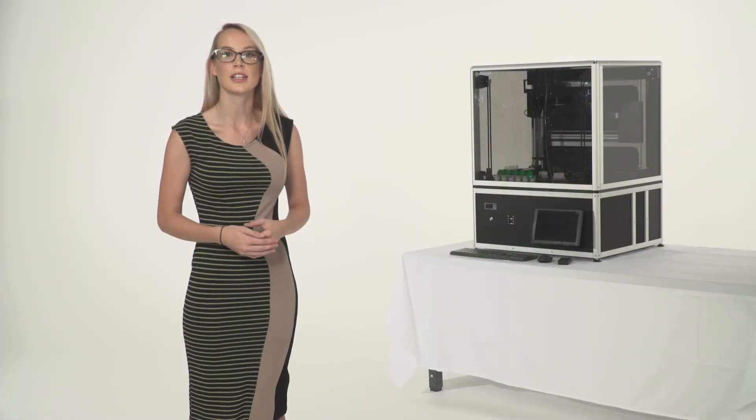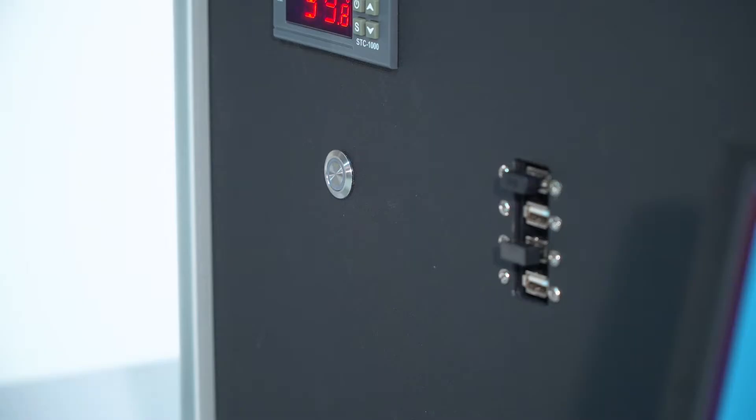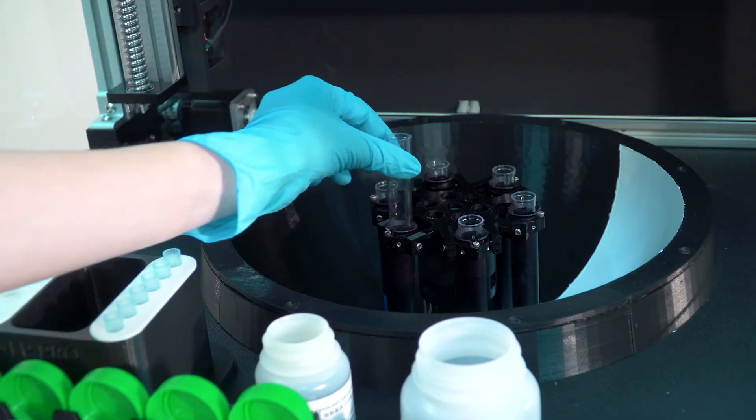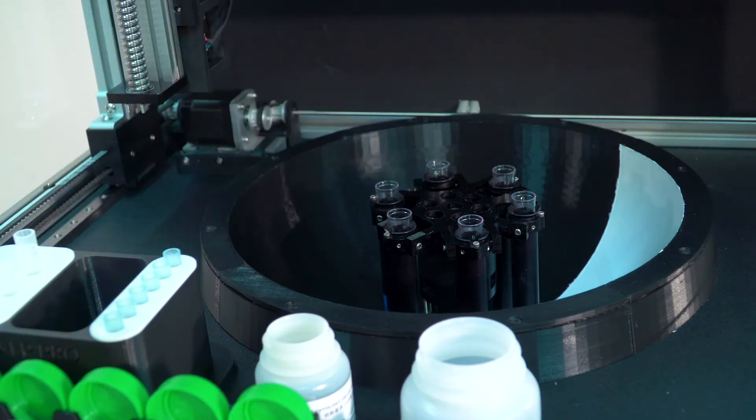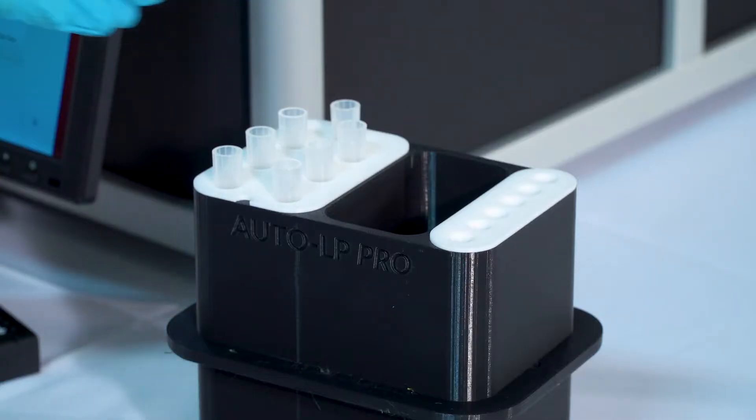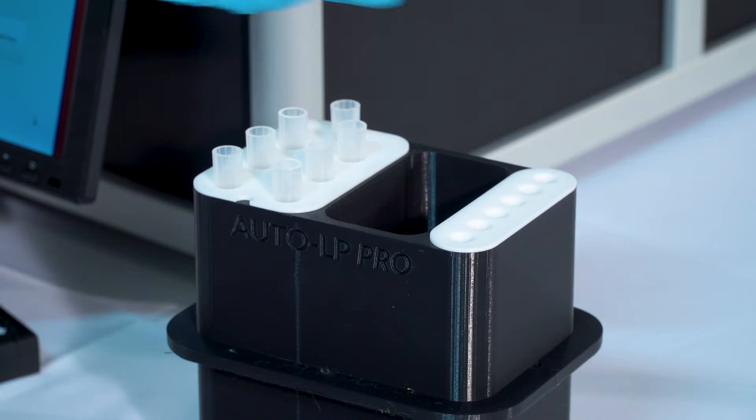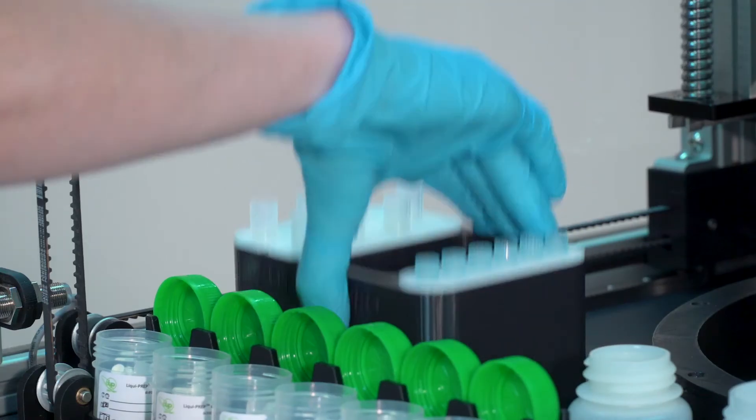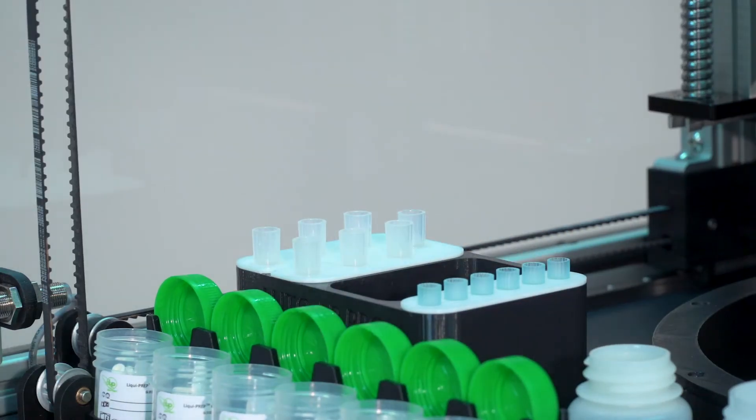Full cytology processing is simple and fast. Start by pressing the open door button. Place the centrifuge tubes and working tube into the AutoLP Pro centrifuge module. Place the 5 milliliter and 1 milliliter pipettes into the pipette tip and waste container, then place the container into the AutoLP Pro.